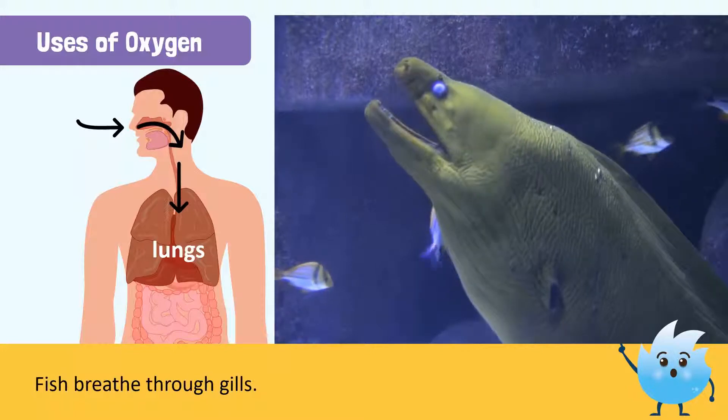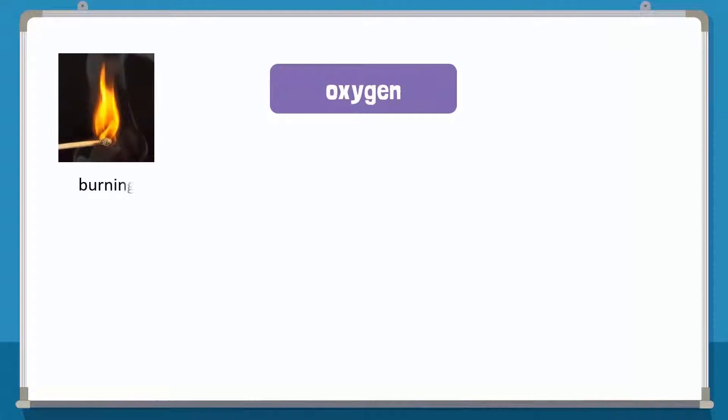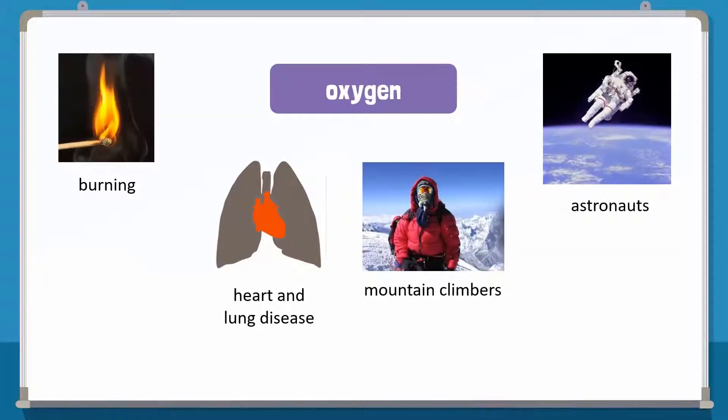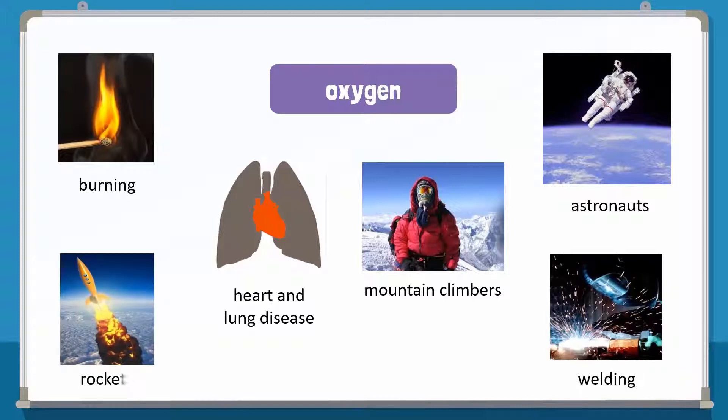There are other uses of oxygen as well. For example, oxygen is needed for burning. In hospitals, oxygen tanks are used to help patients to breathe. Mountain climbers and astronauts also rely on oxygen tanks where natural oxygen levels are low. It is used in welding and to burn fuel in rockets.